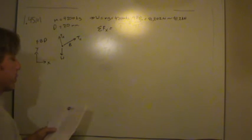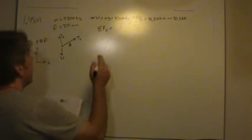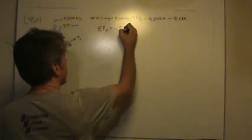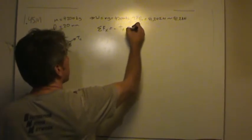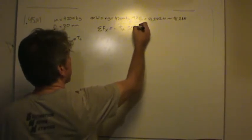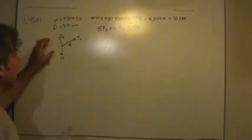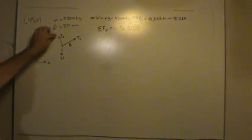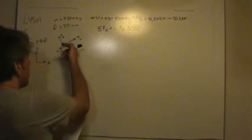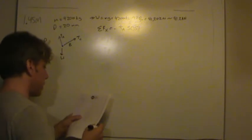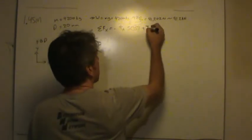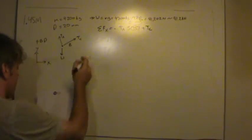Of course, z would be coming out of the board, but most of our problems are planar. So TA has a component in the negative direction. So negative TA multiplied by sine of 35 degrees. I'll let you think about that and make sure you understand why it's sine of 35 degrees.